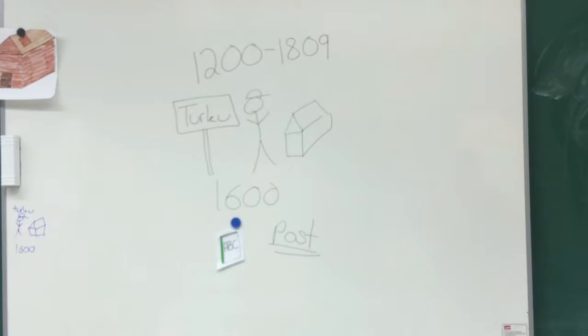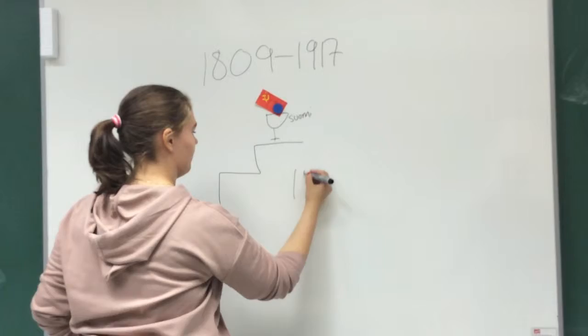In the year 1809 Sweden lost Finland to Russia. Helsinki was made the new capital and the first railways and public schools were made.